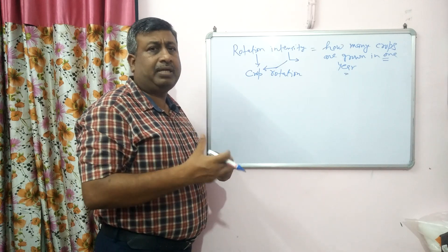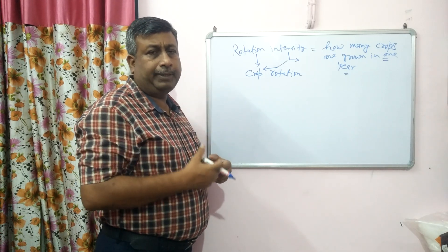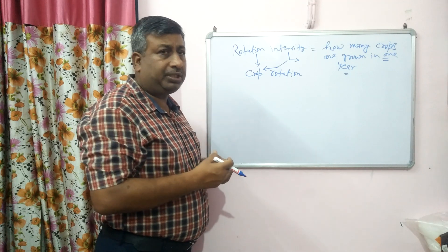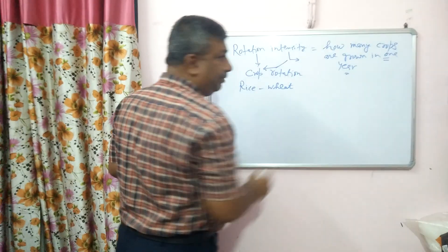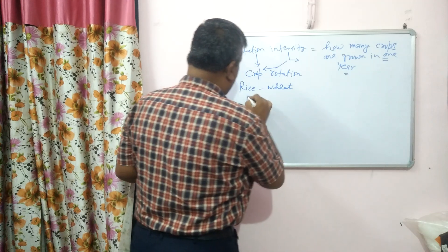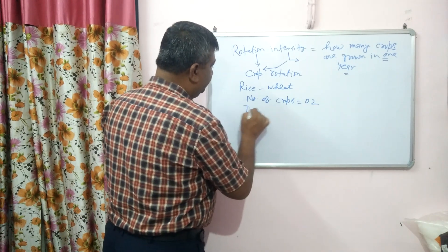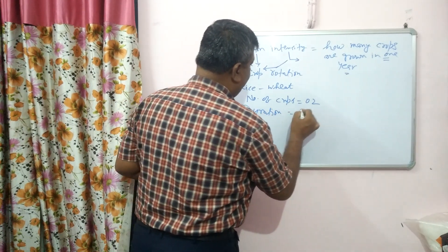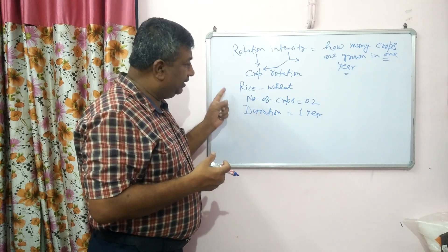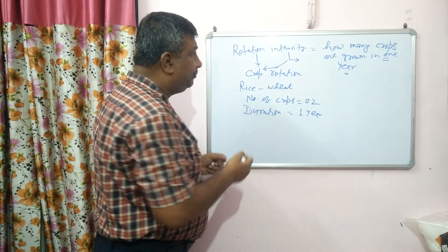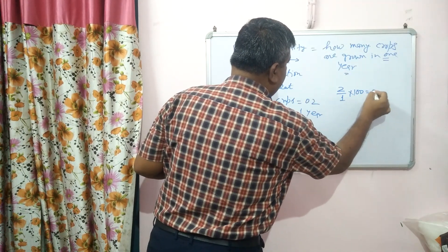For example, rice-wheat is a one-year rotation, meaning in one year we are growing two crops. Rotation intensity tells us the number of crops and the duration of rotation. The duration of rotation is one year, and we are growing two crops. That's why rotation intensity is 2 divided by 1, multiplied by 100, which gives 200 percent.